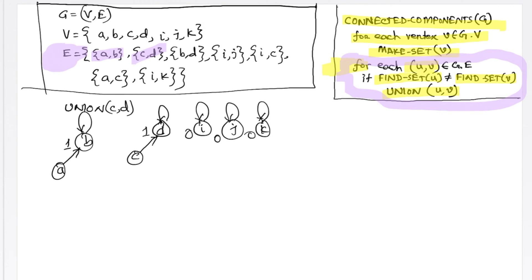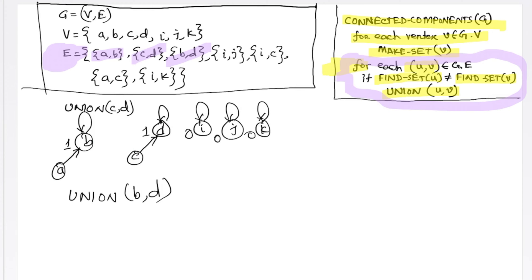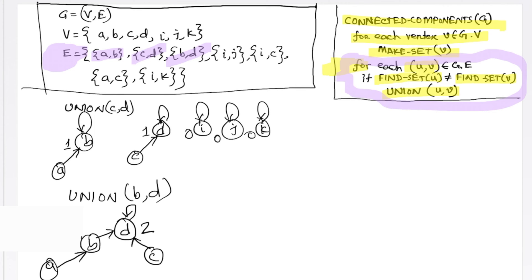Now the next edge is B, D. For B, D, find set B is in this rooted tree and find set D will result in a root in this tree. As a result, we have to merge these two trees. Since both these trees have a height of 1, we will make the second tree which has the root D the parent. B will become a child of D and the rank will increase by 1, which makes the rank 2. The rest of the trees will remain the same.